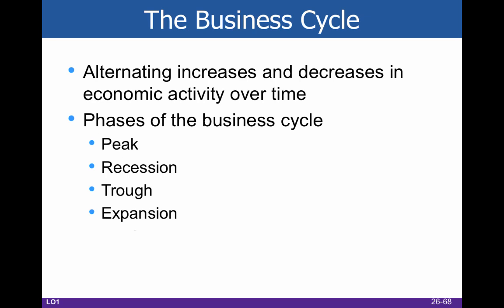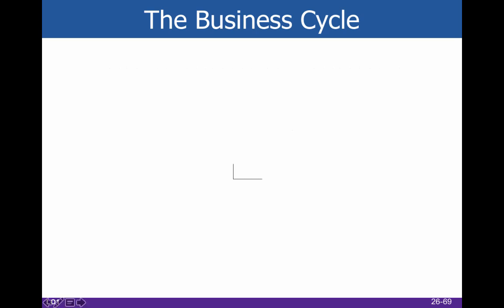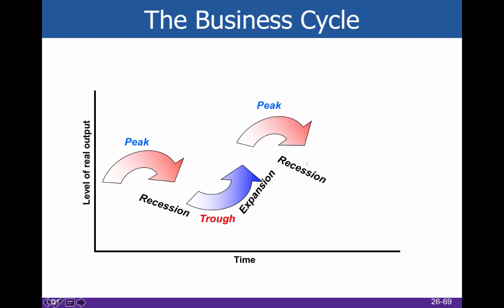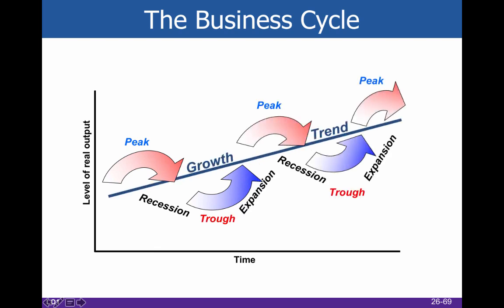It's easiest to understand when we look at this as a graph. Over here you've got your level of real output — so how much stuff is getting made — and then here we have time. What you wind up with is basically this line of best fit, but the business cycle is always doing this kind of stuff. Here you've got your peak, that is where GDP kind of hits its max, and then it starts to go down.